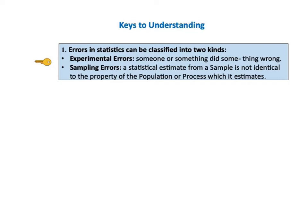Here is the first key to understanding. Errors in statistics can be classified into two kinds: experimental errors, in which someone or something did something wrong, and sampling errors, in which a statistical estimate from a sample is not identical to the property of the population or process which it estimates.